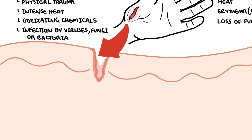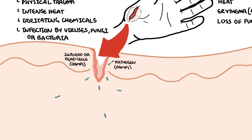The inflammatory response begins with exposure of injured cells or dead cells, which release damage-associated molecular patterns, and depending on the site of injury, pathogens and their pathogen-associated molecular patterns. These molecular patterns will trigger inflammation.